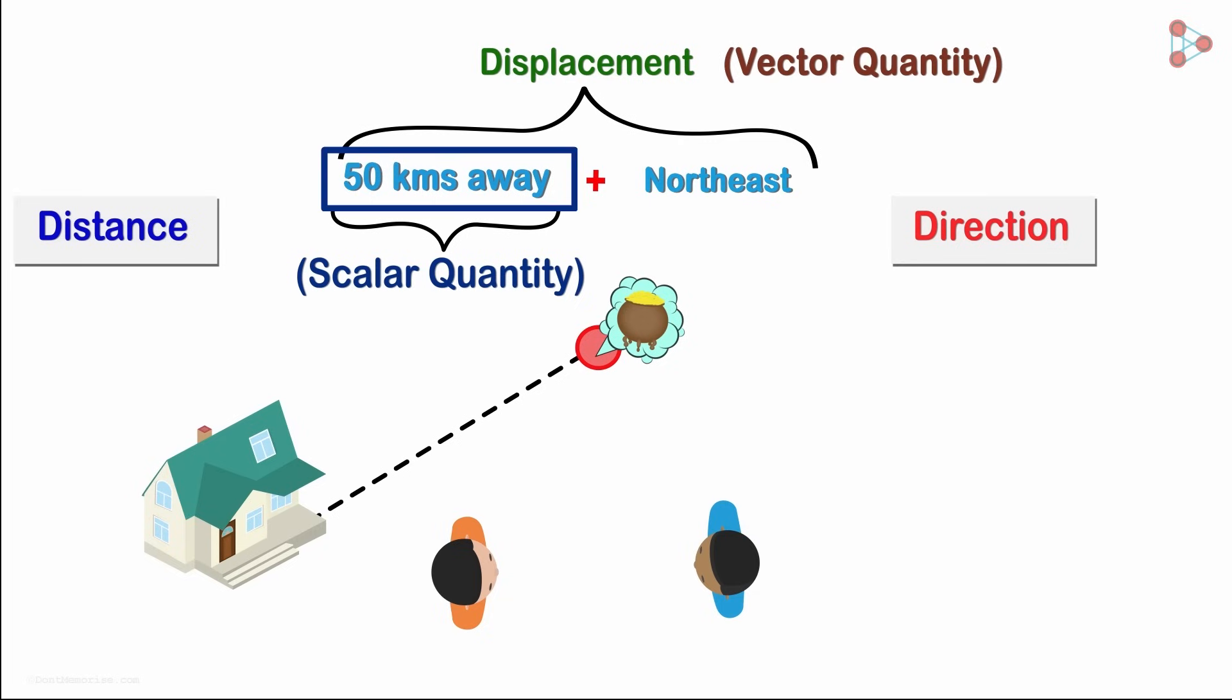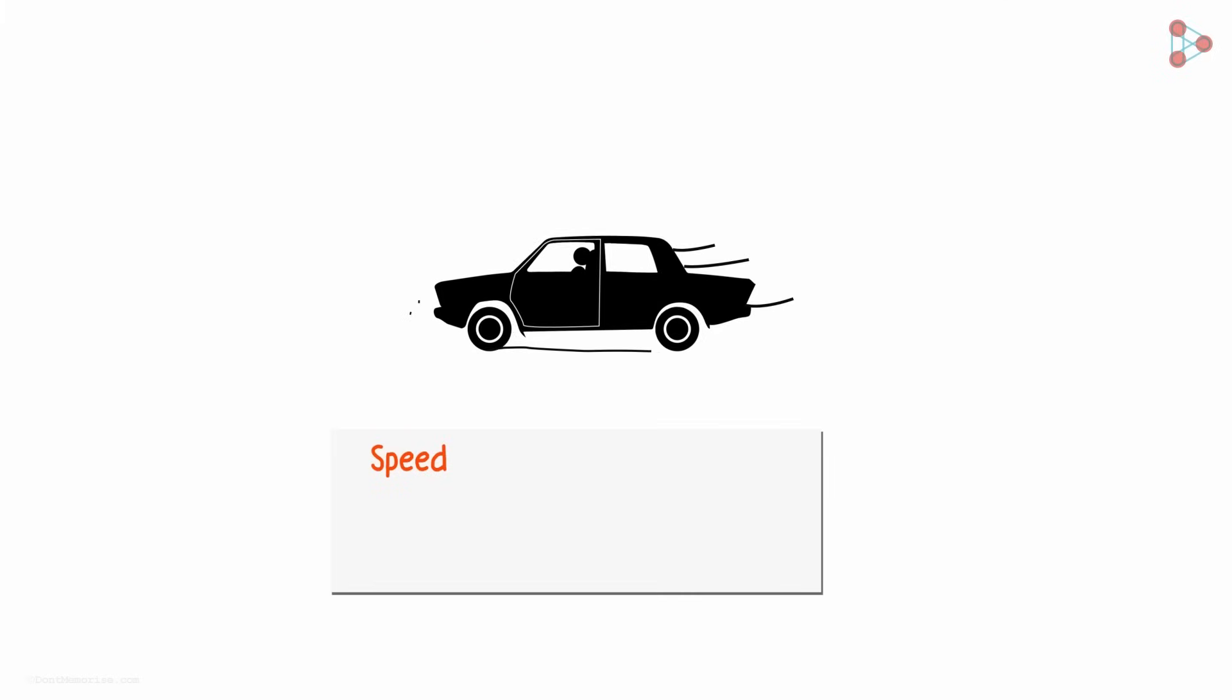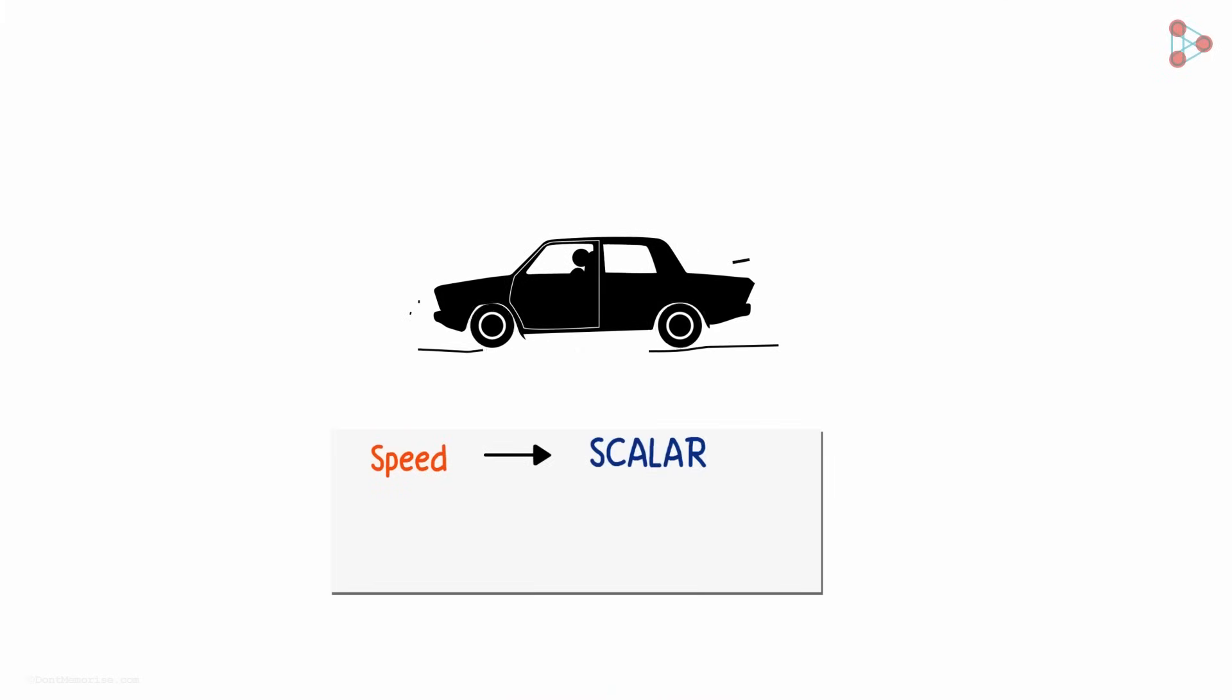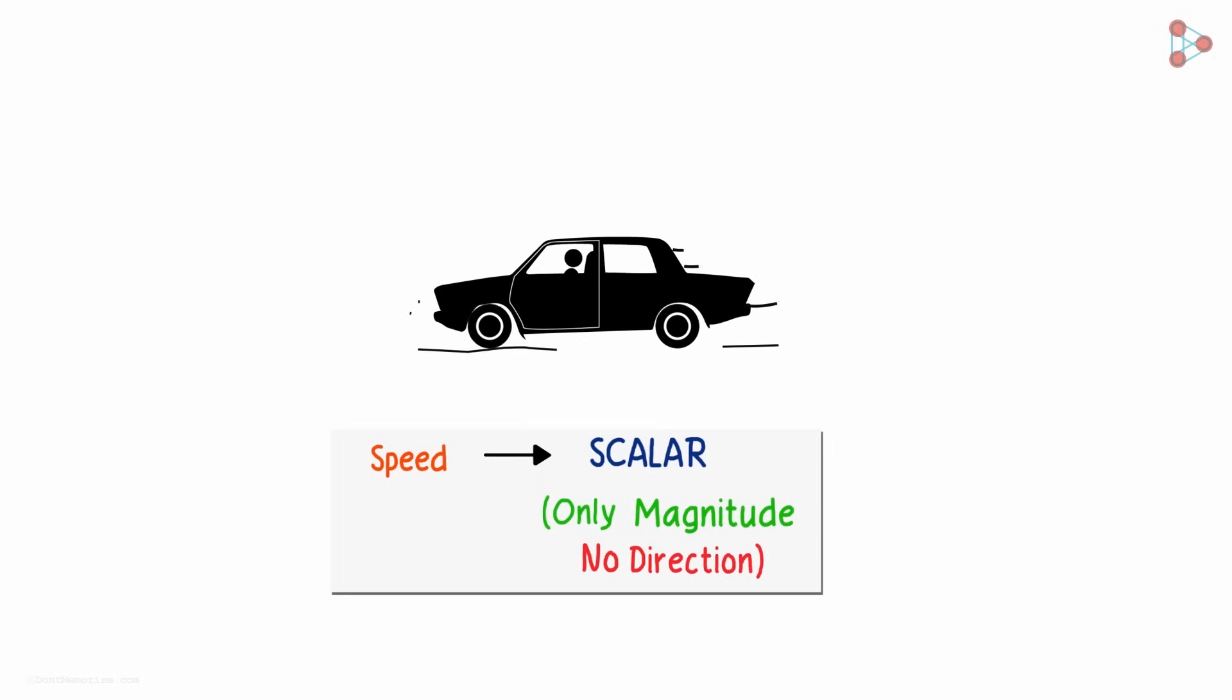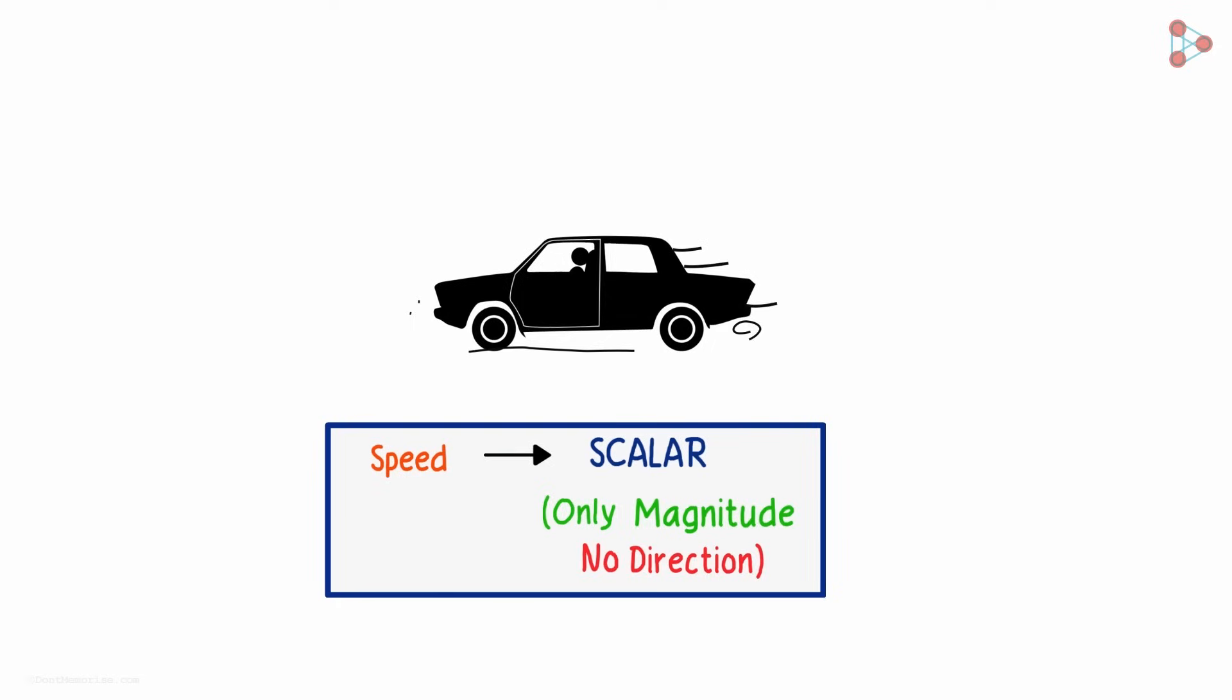Scalar quantities are one-dimensional and vector quantities are two-dimensional. Speed is a very good example of what we call in physics, a scalar quantity indicating only magnitude but not specifying any direction. So that's what scalar quantities are.